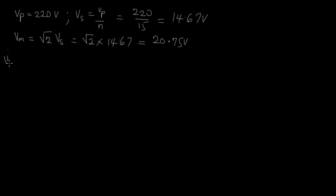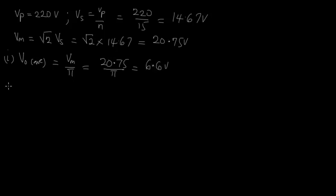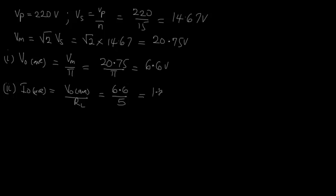First, V_out average equals VM over pi, which is 20.75 divided by pi, equal to 6.6 volts. Number two, I_out average equals V_out average over RL, which is 6.6 over 5, giving 1.32 amperes.